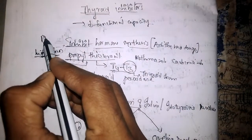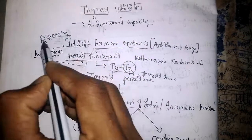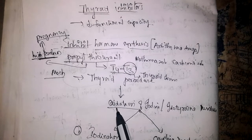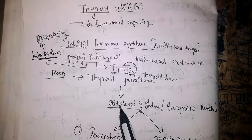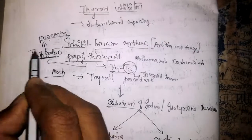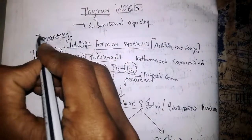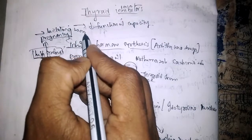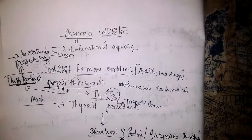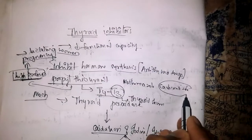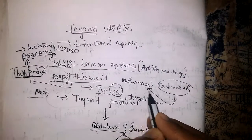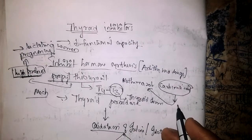Due to its high protein binding, propylthiouracil can be used in pregnancy. It does have teratogenicity, but the teratogenicity is somewhat less compared to the other two drugs. For the same reason, it is also used in lactating women. Carbimazole acts by getting converted to methimazole.